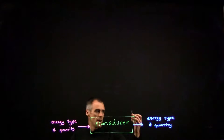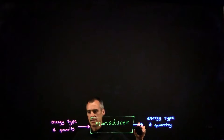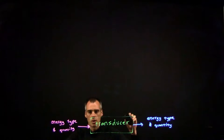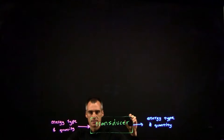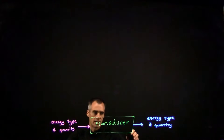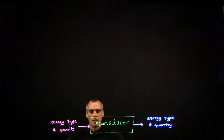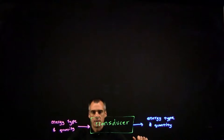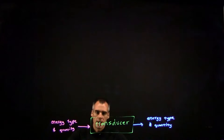So this is a mouse and it is sort of translating a physical quantity — my movement in space — and it is translating that into an electrical signal that goes off to my computer so that it knows where my mouse is.